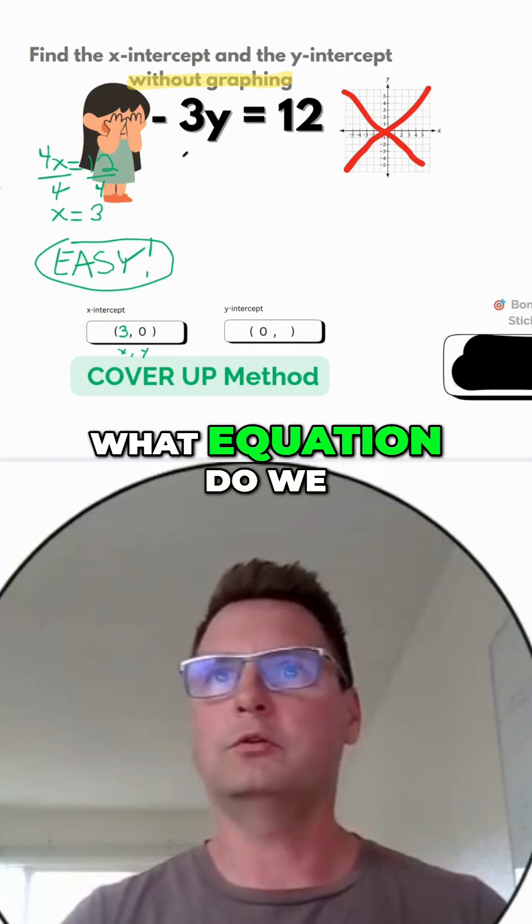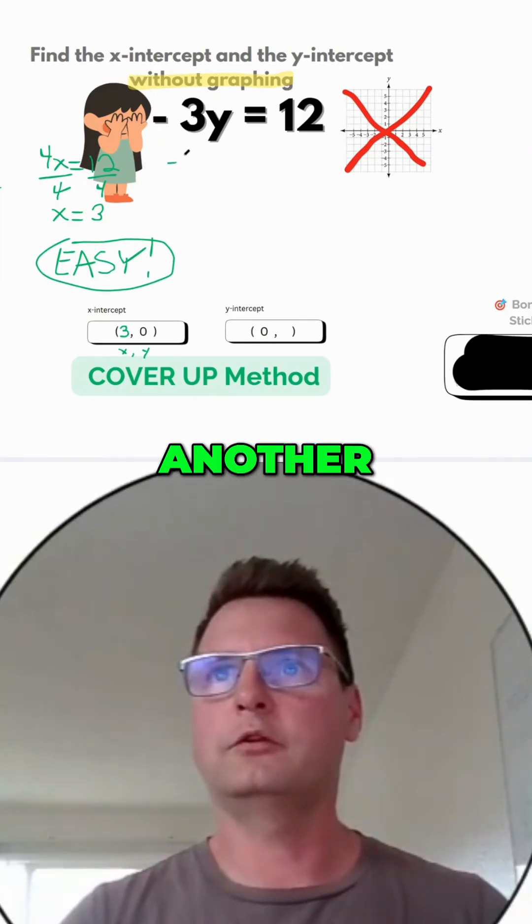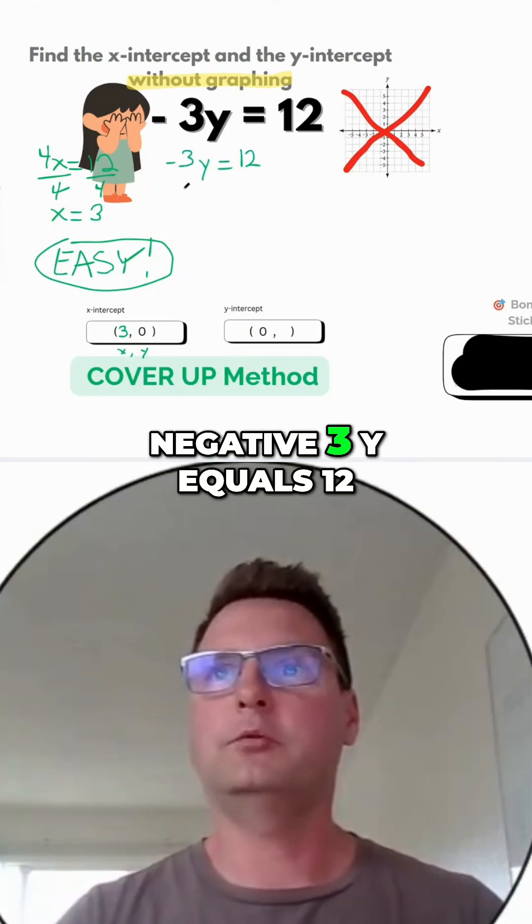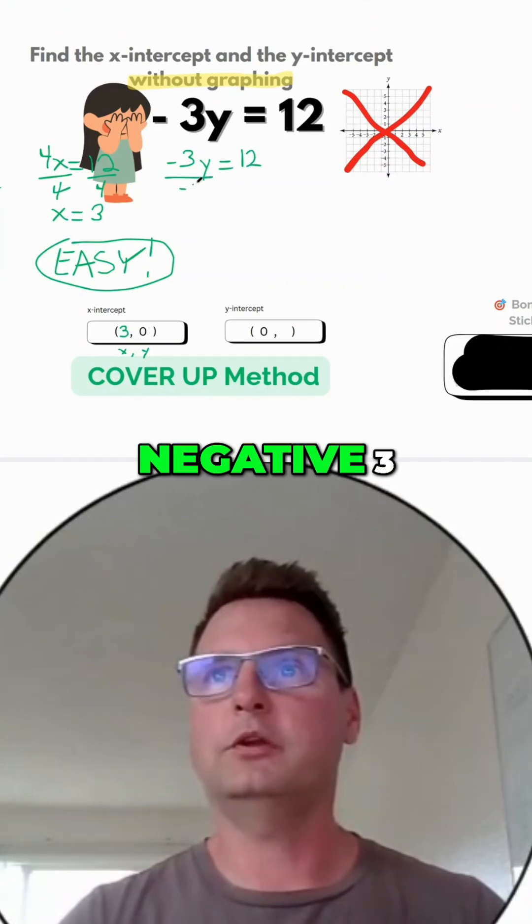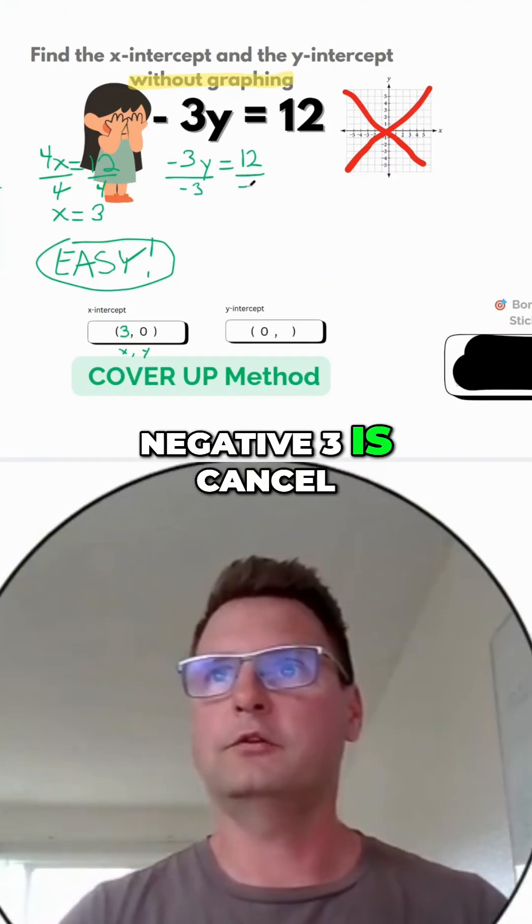What equation do we have now? Another really easy equation. Negative 3y equals 12. We're going to divide both sides by negative 3. Negative 3s cancel.